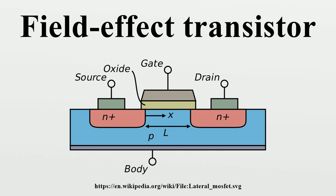The device consists of an active channel through which charge carriers, electrons or holes, flow from the source to the drain. Source and drain terminal conductors are connected to the semiconductor through ohmic contacts. The conductivity of the channel is a function of the potential applied across the gate and source terminals.